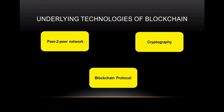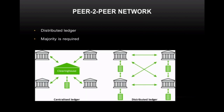There are three underlying technologies in blockchain: the peer-to-peer network, cryptography, and the blockchain protocol. In the initial stages, we had a centralized server which had many nodes connected to it and it used to have a centralized ledger.